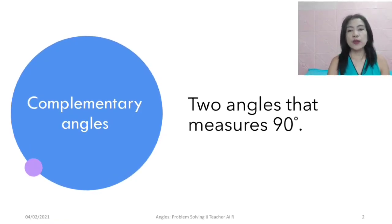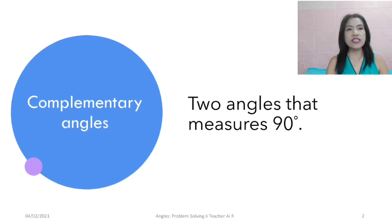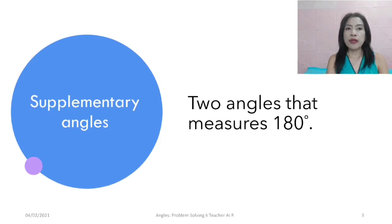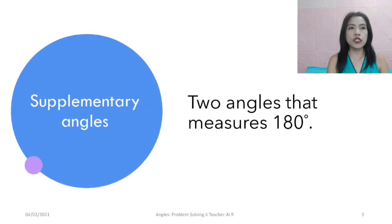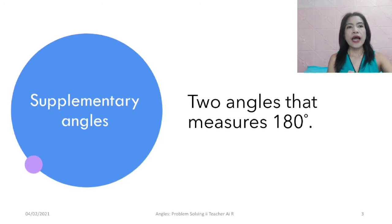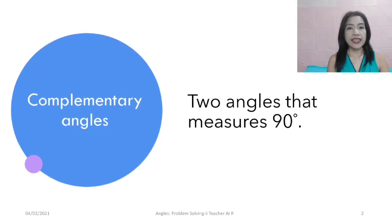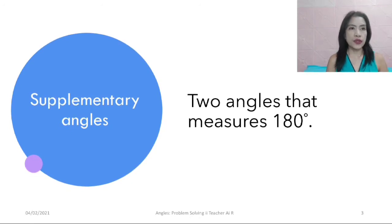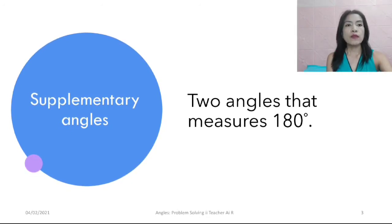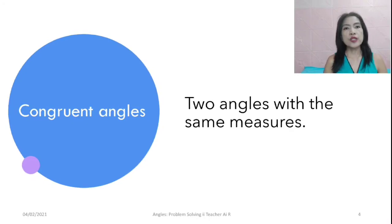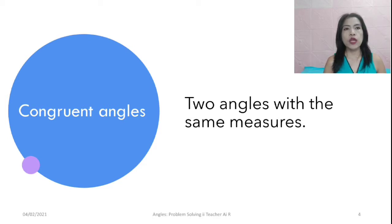We have here: when we say complementary angles, these are two angles that measure 90 degrees. And when we say supplementary angles, these are two angles that measure 180 degrees. So kids, remember that complementary is 90 and supplementary is 180. And we also have congruent angles — they are two angles with the same measure.